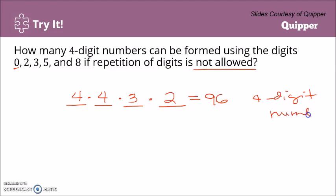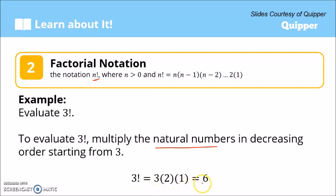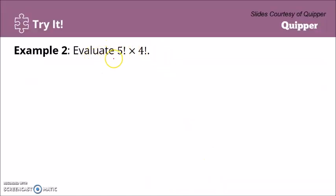Now, what about the factorial notation? The factorial notation is written as n!, read as 'n factorial,' where n is greater than zero. n factorial is equal to n times (n−1) times (n−2) dot dot dot times 2 times 1. For example, let's evaluate 3!. Three factorial equals 3 times 2 times 1, which equals 6.